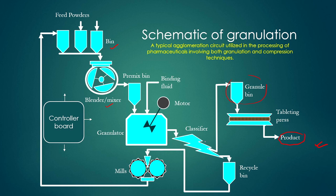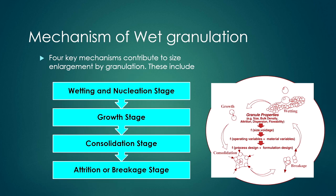After granule formation, the output passes to a classifier where granules are separated from unconverted particles. The granules go to a granule bin, then to a tablet press to obtain the desired product size. Components not converted to granules are recycled: milled to break up any formed granules, then passed back to the feed powders. This is the simple schematic of the granulation process used in the pharmaceutical industry. Now we discuss the mechanism of wet granulation and how it occurs.